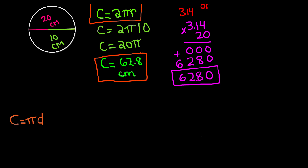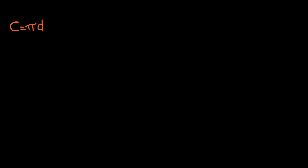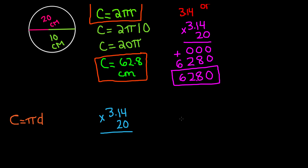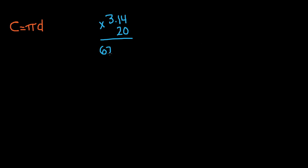Let's keep the same measurements: our diameter is equal to 20 centimeters. If we multiply 20 times 3.14, we get 62.8. So our circumference is still equal to 62.8. This is essentially the same formula — some people find it easier because you don't have to multiply the radius times 2; you can simply multiply the diameter times pi to find the circumference.